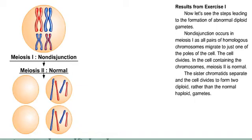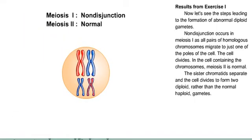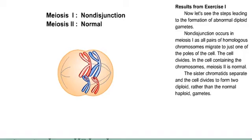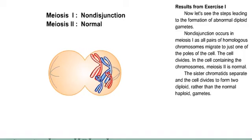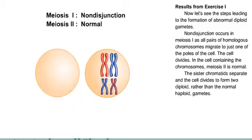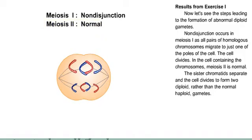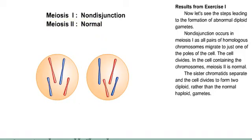Now let's see the steps leading to the formation of abnormal diploid gametes. Non-disjunction occurs in meiosis I, as all pairs of homologous chromosomes migrate to just one of the poles of the cell. The cell divides. In the cell containing the chromosomes, meiosis II is normal. The sister chromatids separate and the cell divides to form two diploid rather than the normal haploid gametes.